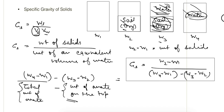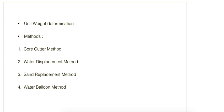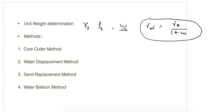Next is unit weight or density determination. We normally calculate the bulk unit weight or bulk density, and if we know the water content we can calculate the dry density from there. There are four methods: core cutter method, water replacement method, sand replacement method, and water balloon method. The first two are used for cohesive soil and the other two are generally used for cohesionless soil.